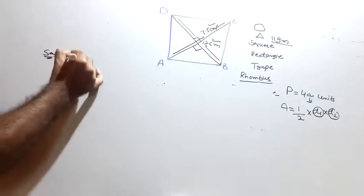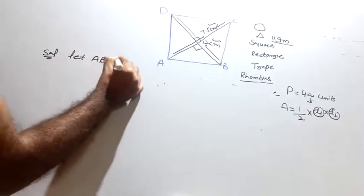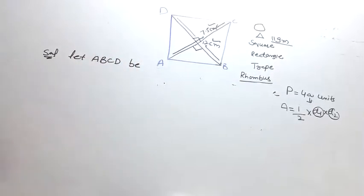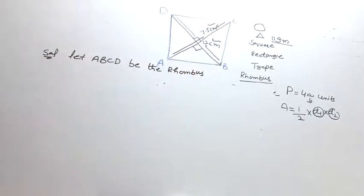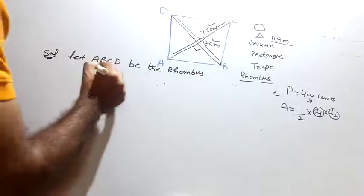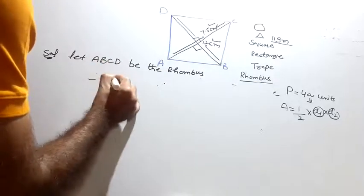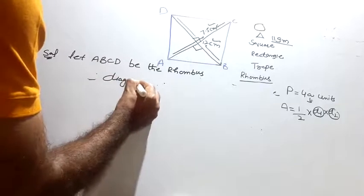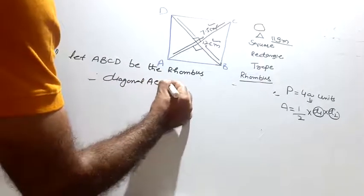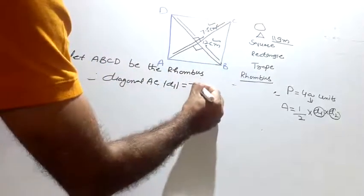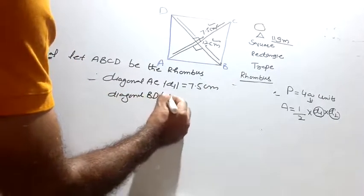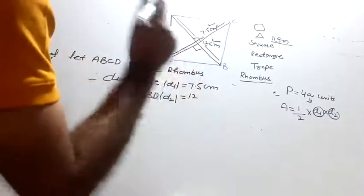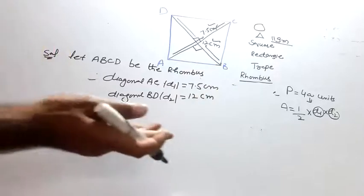Let ABCD be the rhombus. ABCD is the rhombus. Diagonal AC, d1 equals 7.5 centimeter. Diagonal BD, d2, equals 12 centimeter.